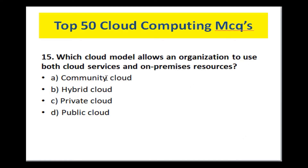Which cloud computing model allows an organization to use both cloud services and on-premises services? Options are: community cloud, hybrid cloud, private cloud, and public cloud. The answer is hybrid cloud — it is a combination of both private and public cloud, so you can use both cloud and on-premises services.